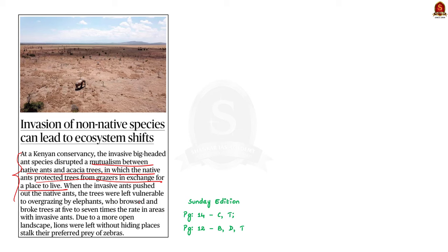Imagine what happens if the native ants are not present. The trees would become vulnerable to overgrazing by elephants, leading to a more open landscape. This not only affects the trees but also leaves no hiding places for the lion while they strike for their prey. This is how a non-invasive species can lead to ecosystem shifts.